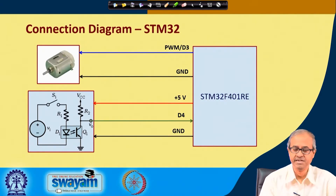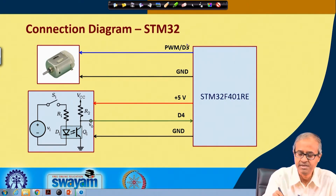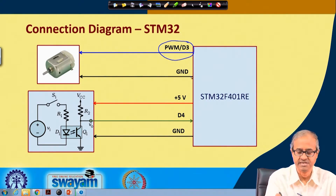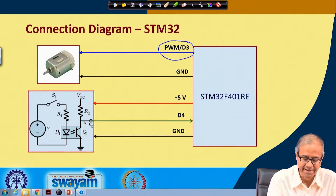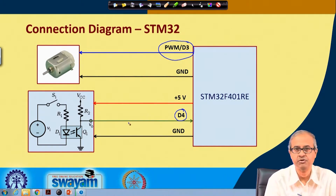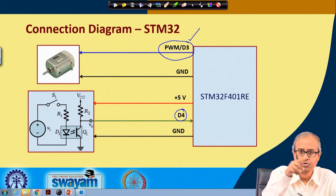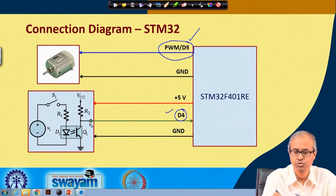The connection diagram is fairly simple. The motor is driven directly from PWM output port D3, with another terminal connected to ground. The optocoupler circuit uses 5V and ground, and its output is fed to digital input pin D4, giving a digital 0 or 1 depending on whether there is an interruption. D3 controls motor rotation and D4 senses the optical interruption. In the first experiment we use only D3; in the second experiment we use both D3 and D4.